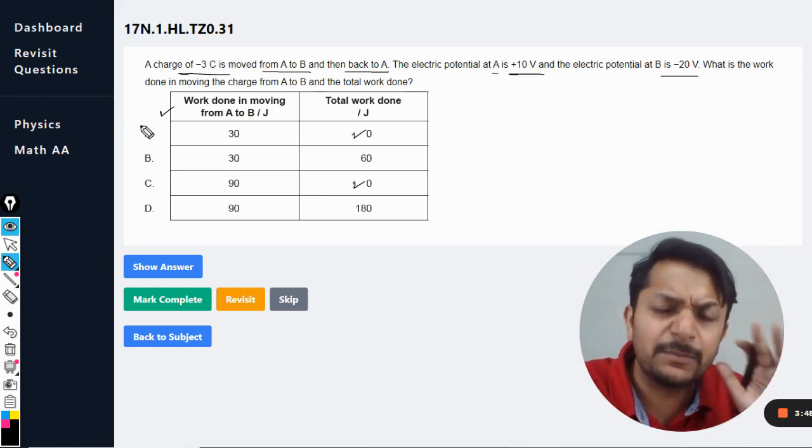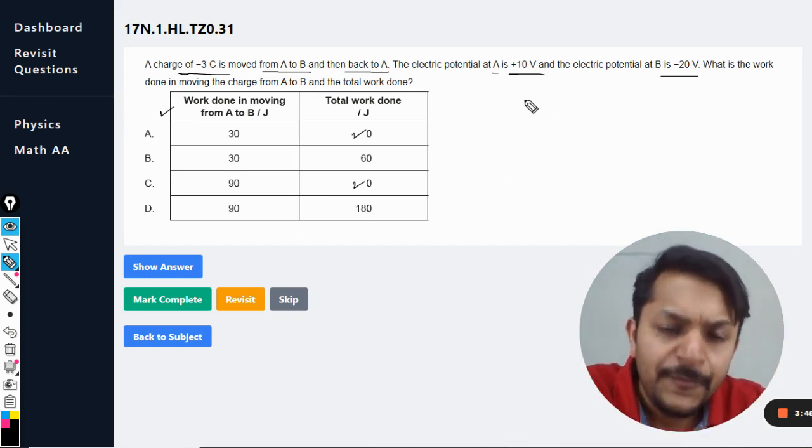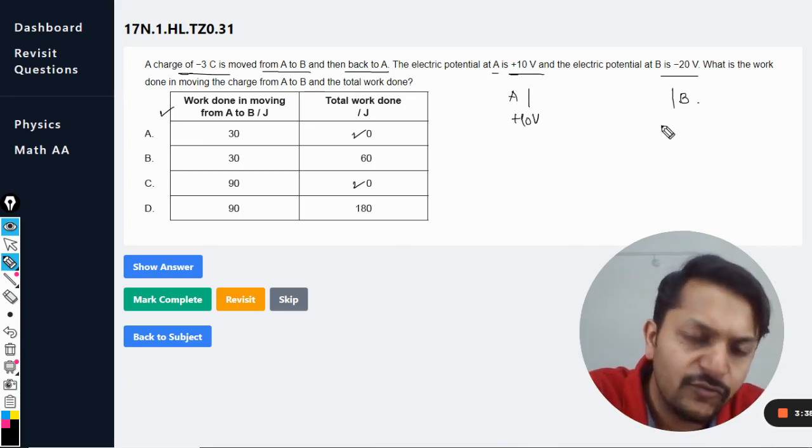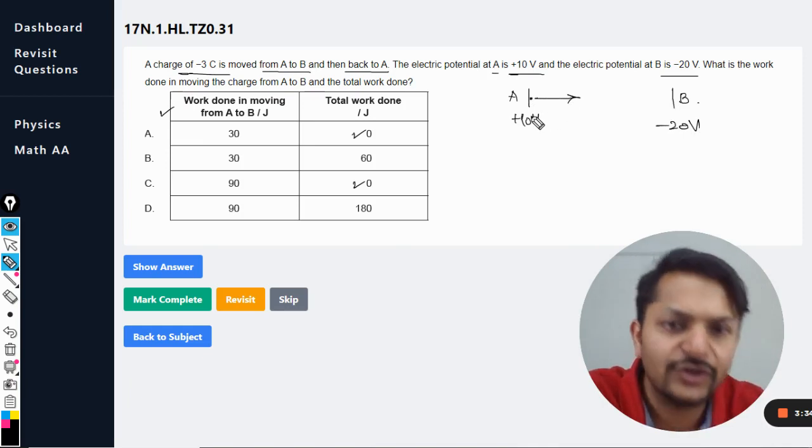Mind you students, there is a very deep concept here, please try to be very careful. So what I'm going to do is, these are the two points. Let us say this is A and this is B. The voltage here is 10 volt and the voltage here is minus 20 volt. So a charge is trying to move from this to this.